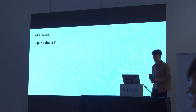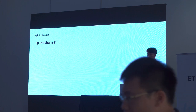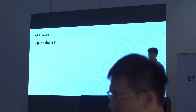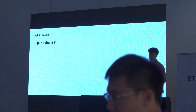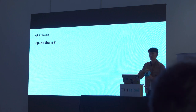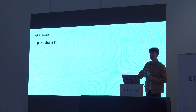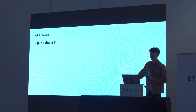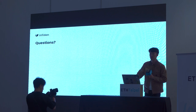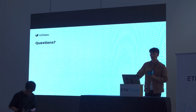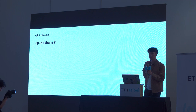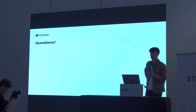A final question from the audience: in the example where the user generated a stealth address, received funds from Alice, and immediately withdrew to their own address — even if you used Tornado Cash on those transactions, would it even make sense to use a stealth address in the first place? Couldn't you just do a Tornado Cash transfer from Alice to Bob directly? The stealth address only makes sense if you actually hold tokens longer, rather than just using it as a routing mechanism.